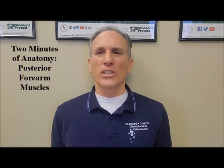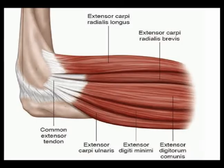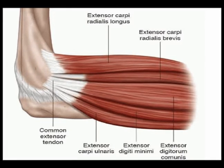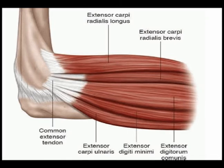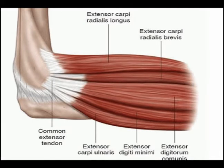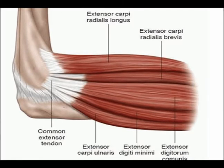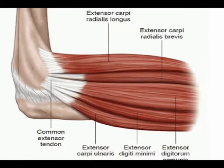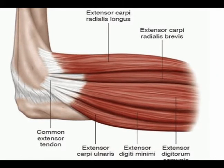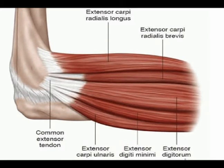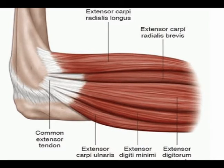The posterior forearm muscles consist of mainly wrist extensors and forearm supinators. There are two layers: the superficial layer and the deep layer. The majority of these muscles originate on the lateral epicondyle of the humerus, and the main actions are wrist extension and forearm supination. Most of the posterior compartment arises from the common extensor tendon from the lateral epicondyle of the humerus.